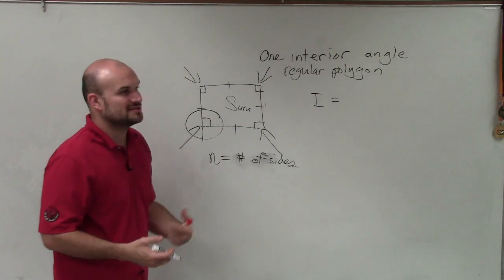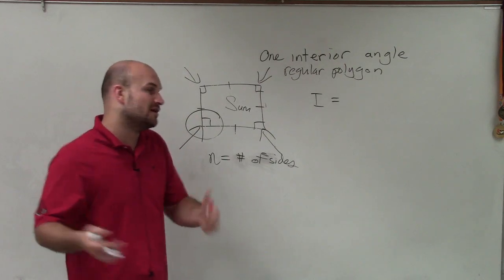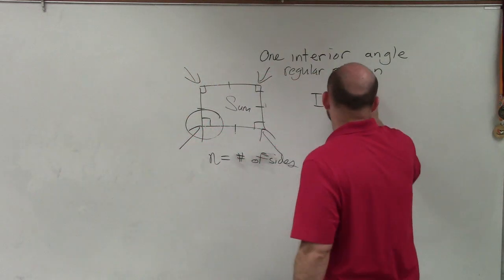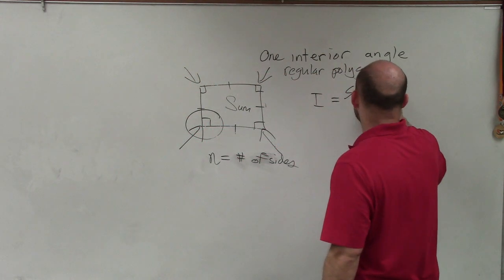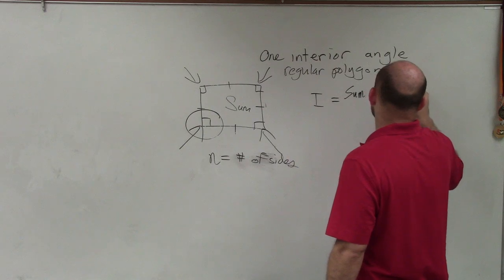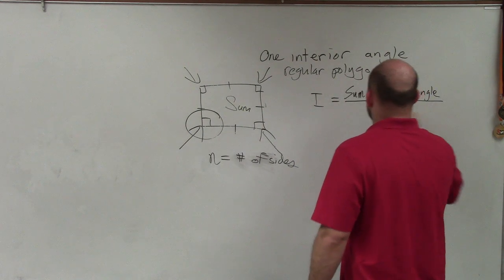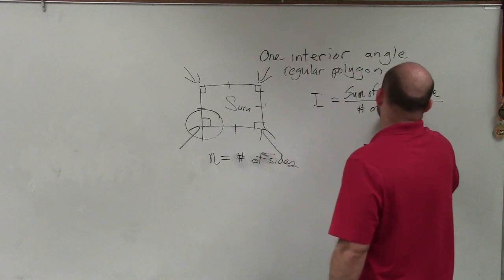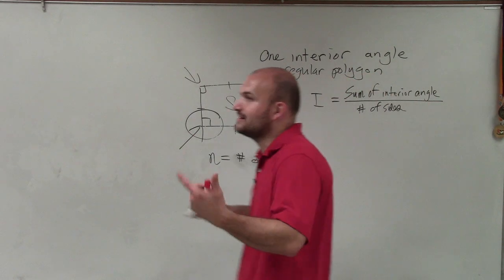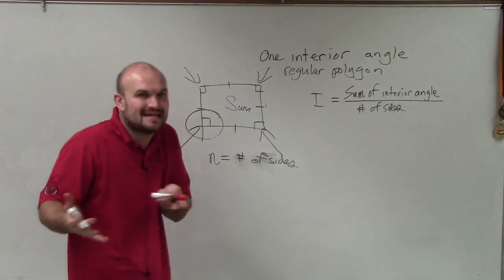So therefore, I need to go back and understand, all right, well, how do I find the sum of all the interior angles? So my individual angle is equal to the sum of interior angles divided by the number of sides. Or if you want to think of it, the number of angles. It's the exact same number.